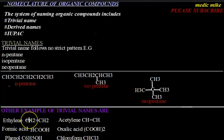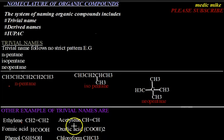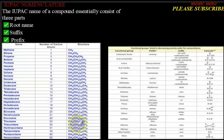Other examples of trivial names include ethylene (CH₂=CH₂), acetylene which can also be called ethyne, formic acid, oxalic acid, phenol, and chlorophyll. You can pause the video to assimilate these. Now we are going to be talking about the IUPAC system.